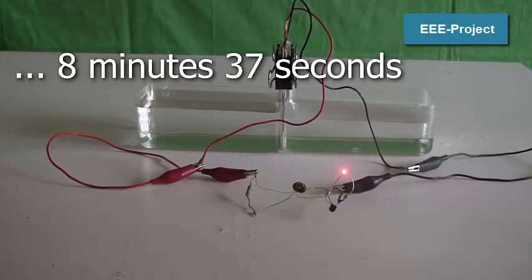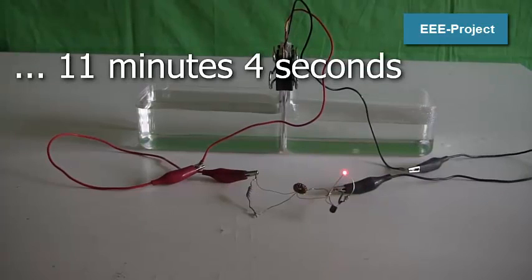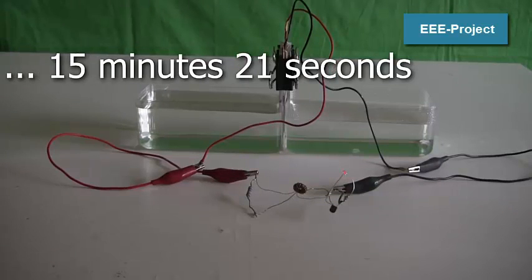As time goes by, more and more heat moves from the hot water to the cold water, warming the cold side and cooling the hot side. And after 15 minutes and 21 seconds, the Peltier module no longer puts out enough voltage and current, and the LED no longer lights up.